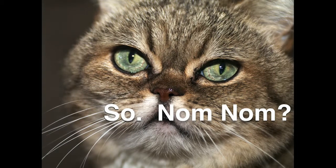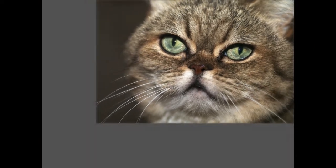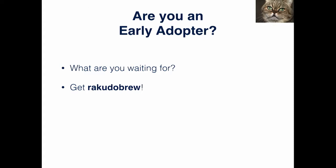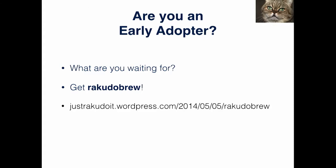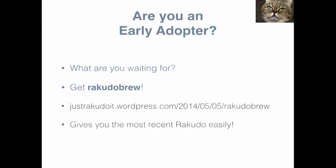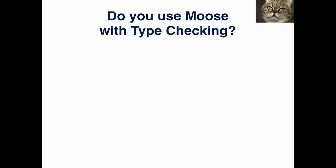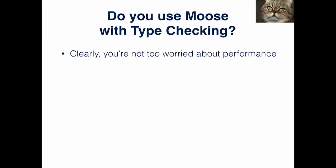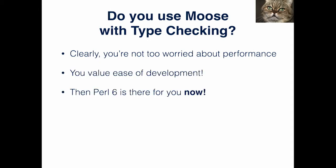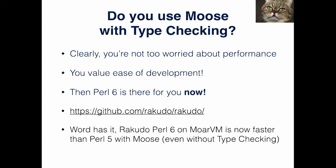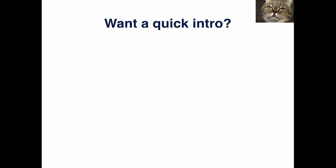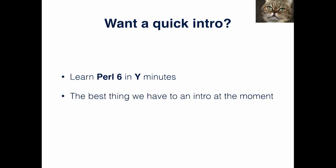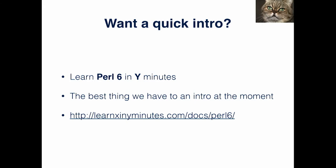So, is Perl 6 ready for production? Well, if you are an early adopter, what are you waiting for? Get Rakudo Star, and it works for you. If you use Moose with type checking — clearly you're not too worried about performance, you value ease of development — then Perl 6 is here for you now. And word has it that this is faster now than Moose, even without the type checking. Want a quick intro? Learn Perl 6 in Y minutes — this is one of the docs, written by one of the newcomers, and it's very good.